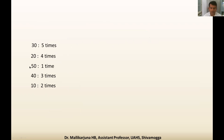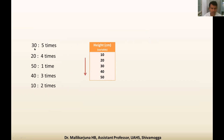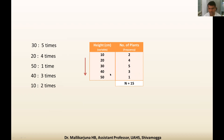Using the same example, we can form a table with height as the variable. I have taken the observations in order: 10, 20, 30, 40, 50, for easy interpretation. The number of plants is called frequency: 10 is repeated two times, 20 is repeated four times, 30 is repeated five times. Total frequency is 15, matching the 15 observations.